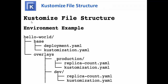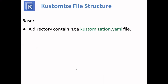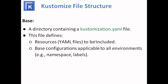Now the file structure of Kustomize looks like this. Here we have taken the example of environments — suppose we want to set up for production and development stages. The base YAML configuration has deployment and customization files, and overlays are added on top for production and development. In the base directory, there is a customization.yaml file which defines resources to be included and the base configuration applicable to all environments, for example the namespace.